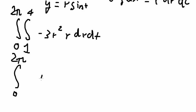So you got r to the power of 3 with the negative. So we have the boundaries from one to four. So we got, let's see, r to the power of 4 over 4.